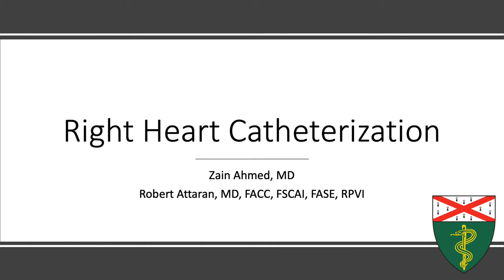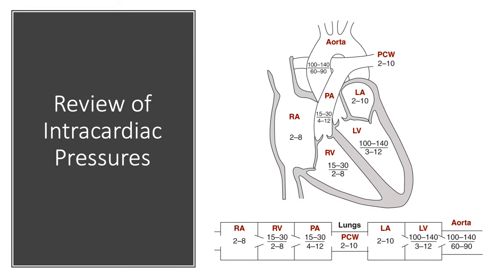This is an introduction to right heart catheterization. During a right heart catheterization, you are passing a catheter from the right atrium into the right ventricle, pulmonary artery, and subsequently into the wedge position. Each chamber and segment has a typical and normal pressure range.